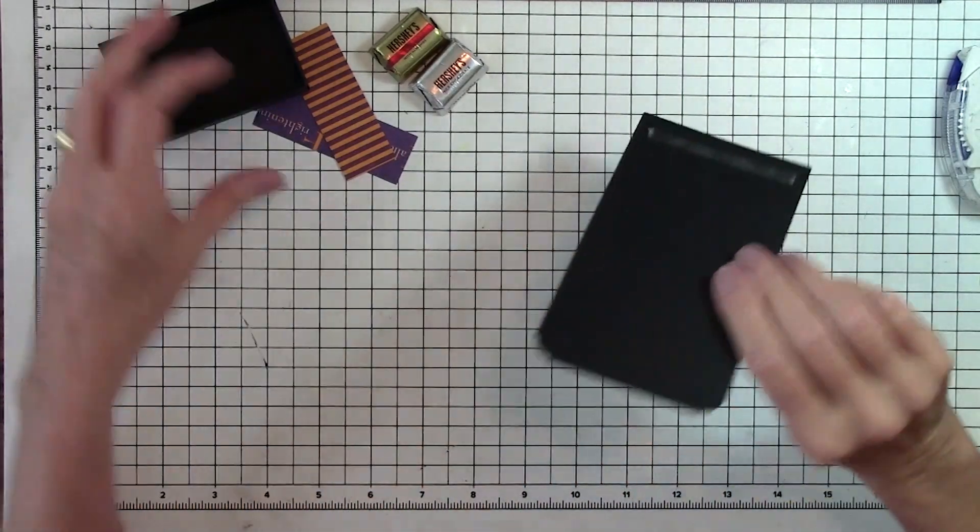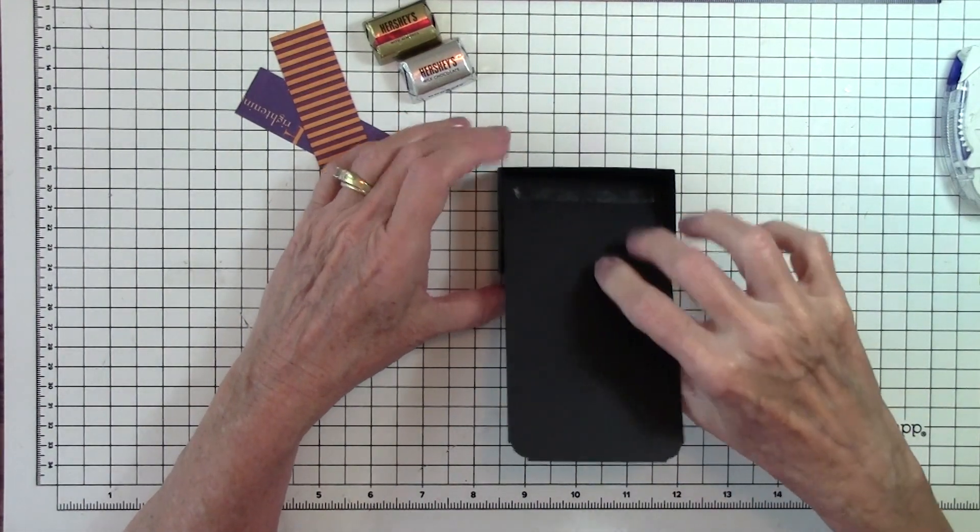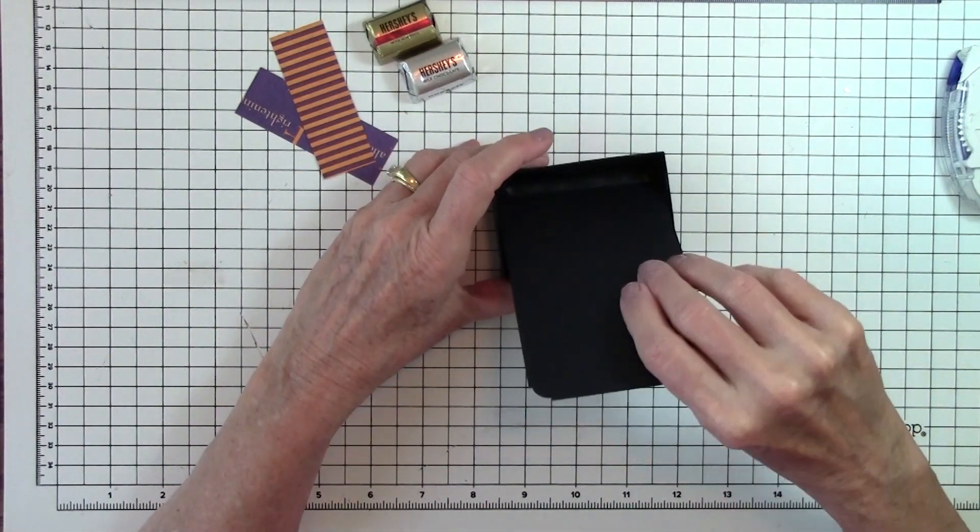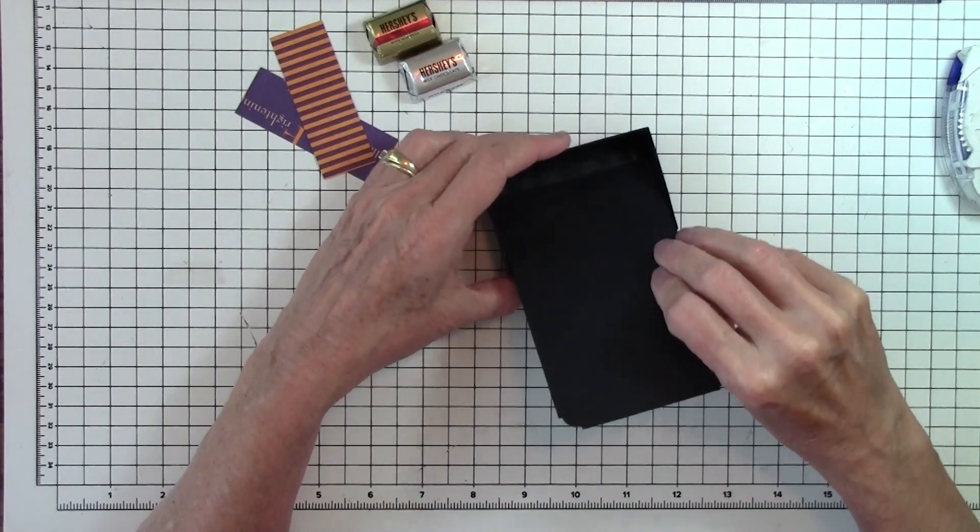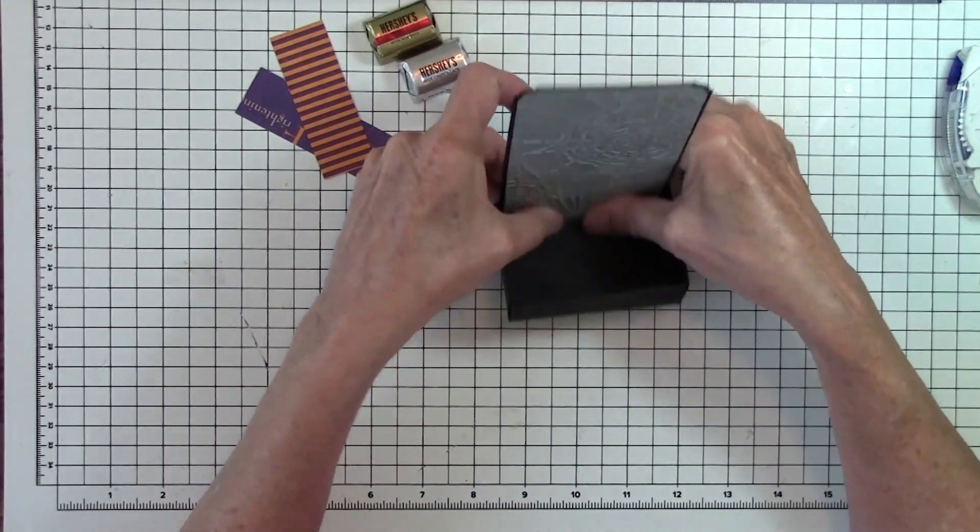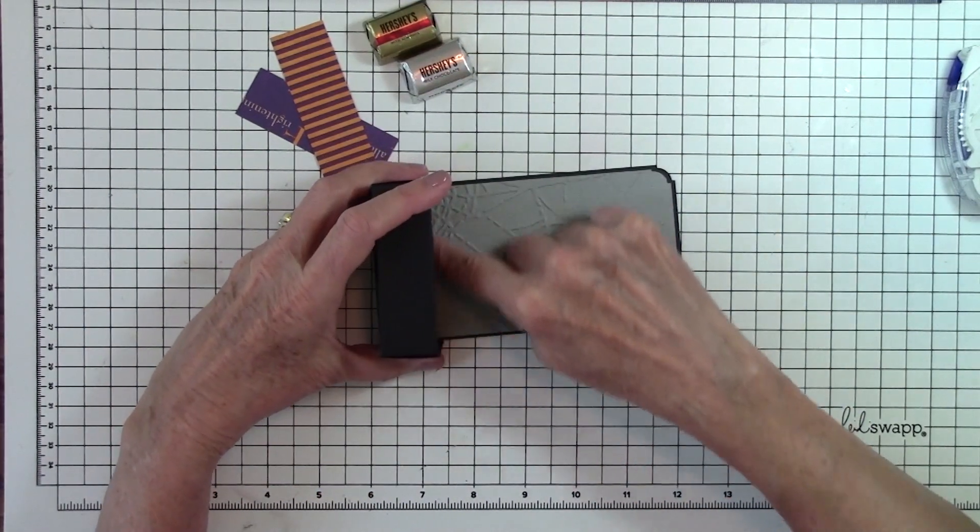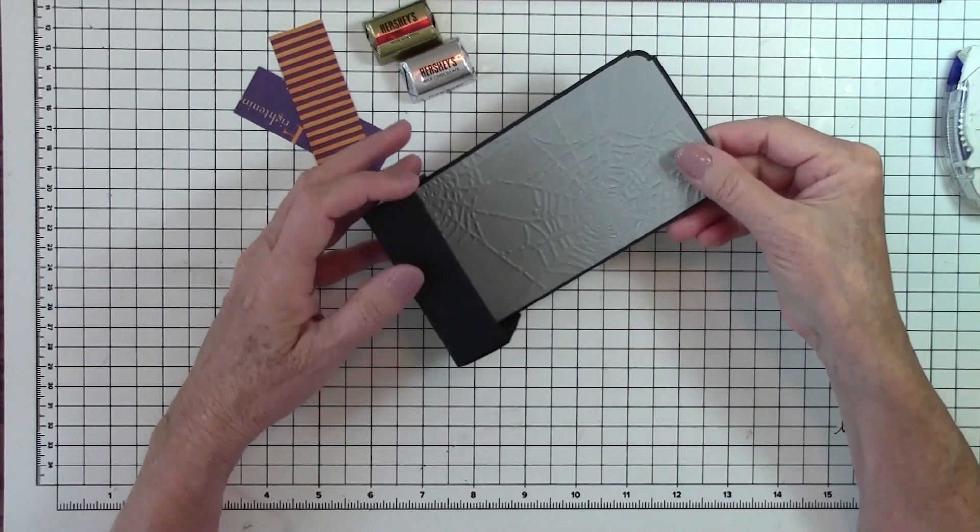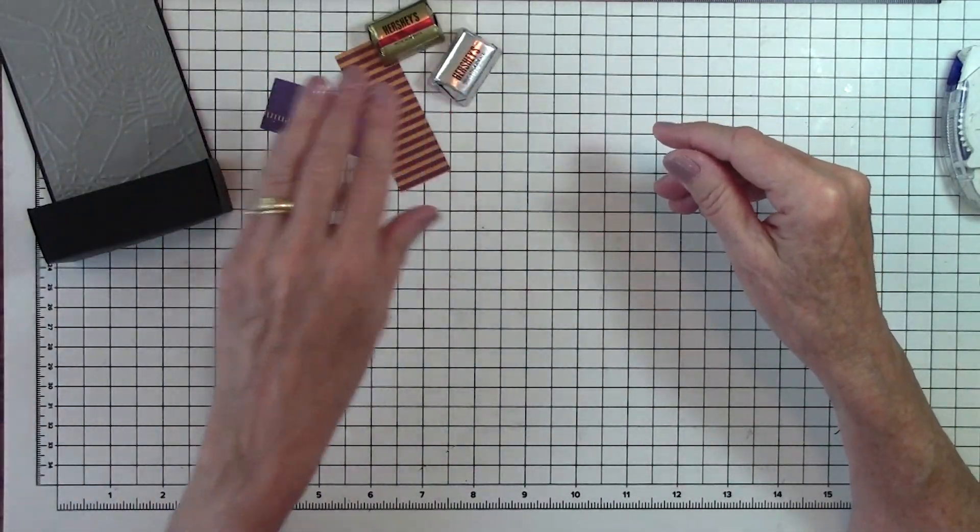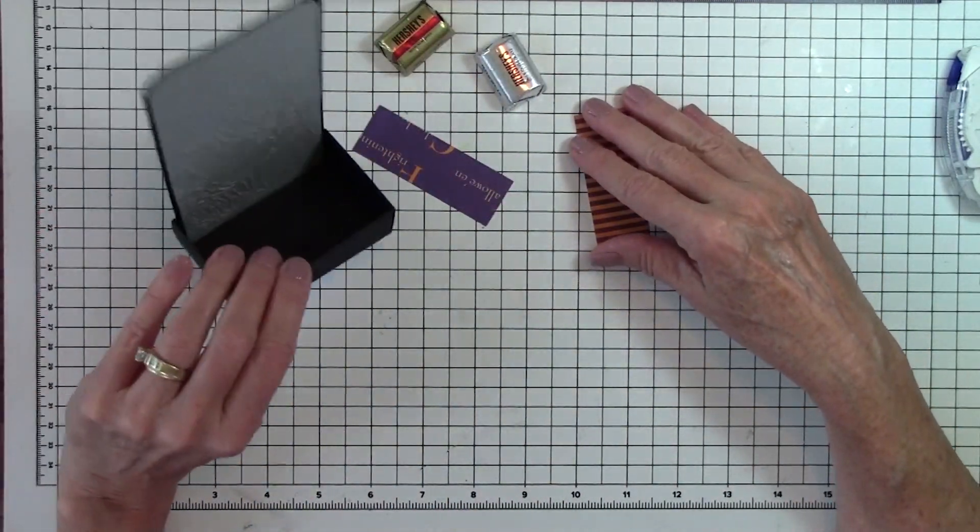Take that off, and take our box, lay it in, make sure it gets all the way to the bottom before you straighten your piece up. And then burnish it down. And your little box is done.